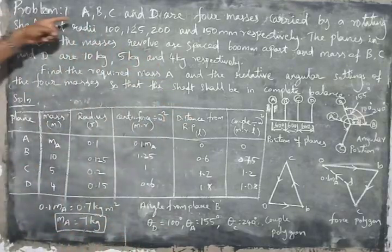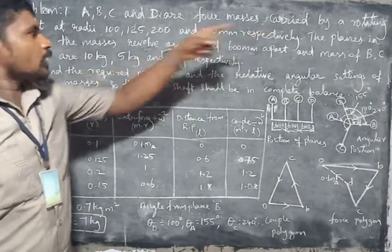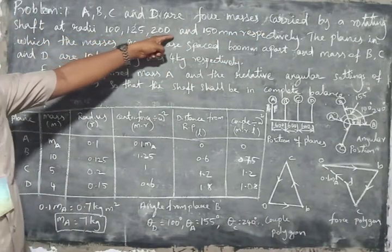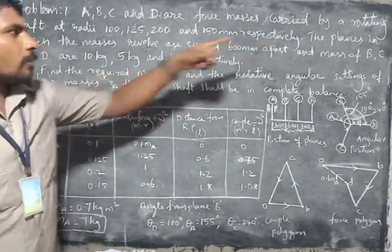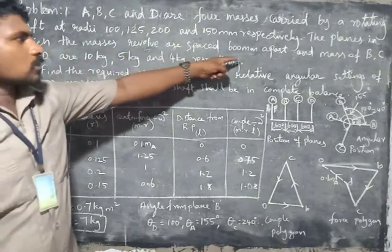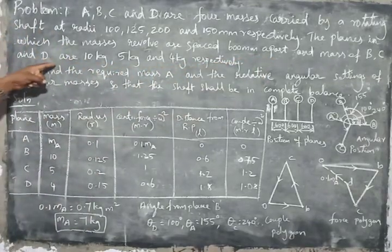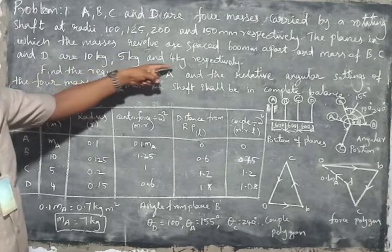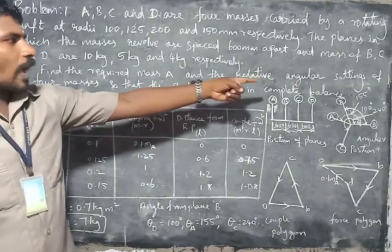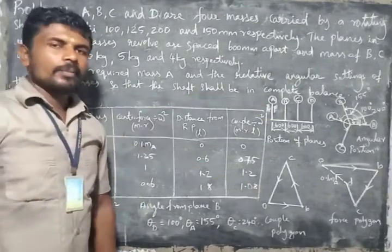Treat the problem. A, B, C, and D are 4 masses carried by a rotating shaft at radii 100mm, 125mm, 200mm, and 150mm respectively. The planes in which the masses revolve are spaced 600mm apart. The mass of B, C, and D are 10kg, 5kg, and 4kg respectively. Find the required mass A and the relative angular settings of the 4 masses so that the shaft shall be in complete balance.